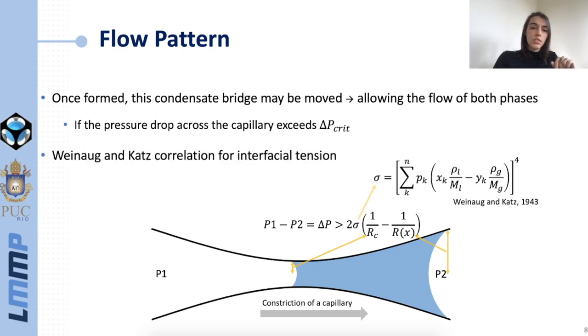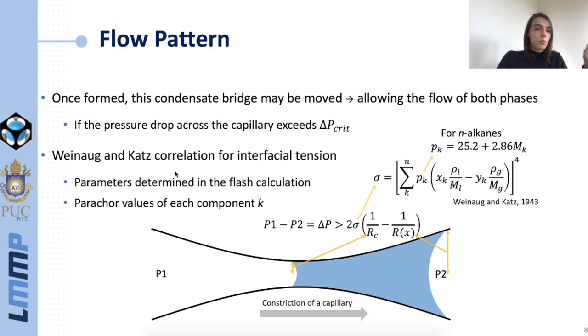To calculate this we've implemented the Weinaug and Katz correlation for interfacial tension, which is a function of some parameters that we determined in our flash calculations and also the partial volumes of all the components of the mixtures.